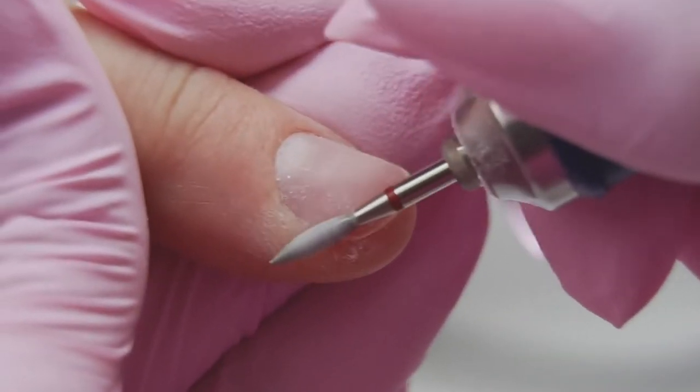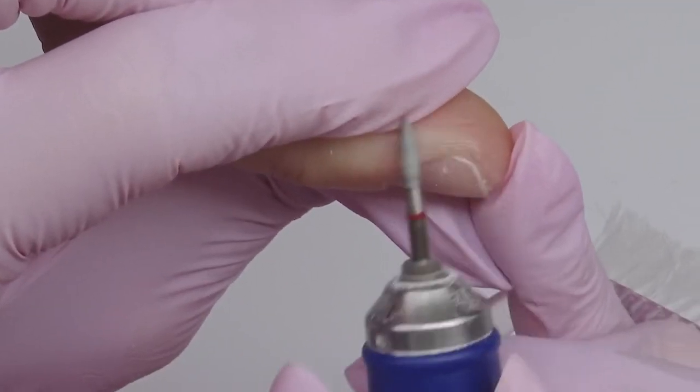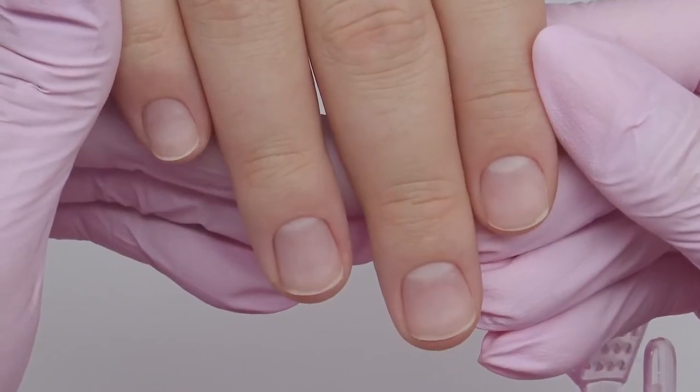Now polish small hangnails and dry skin. Forward position. The speed is 10,000 rpm. I remove the dust and degrease the nail plate. We're done with the manicure stage.